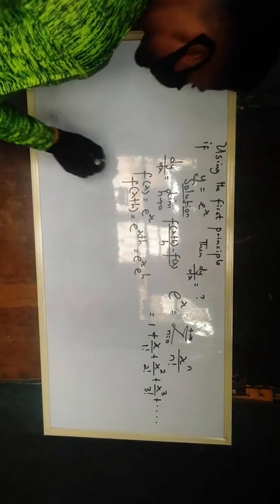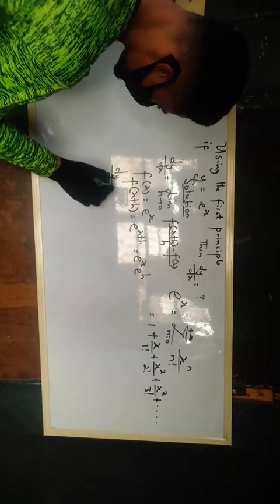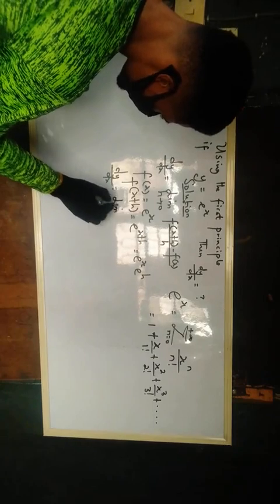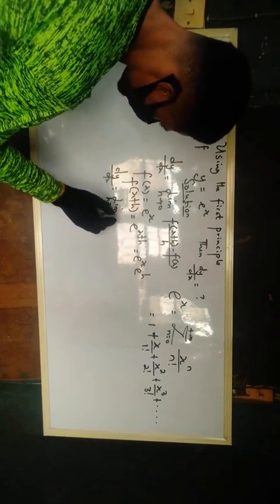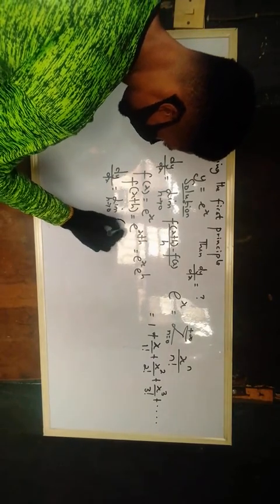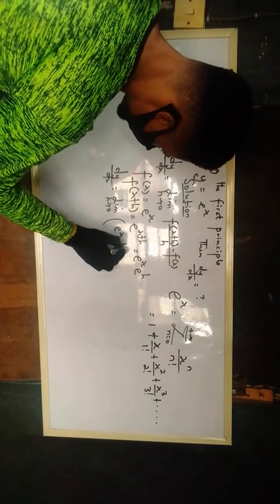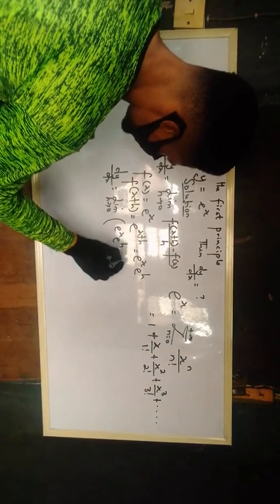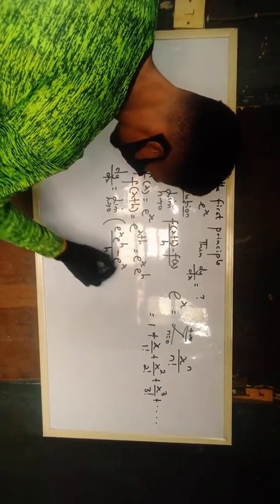Okay, we now have our dy/dx to be limit as h is approaching 0, f of x plus h is e raised to power x, e raised to power h, minus f of x, that is e raised to power x, over h.